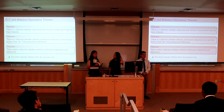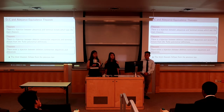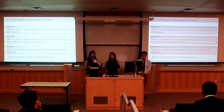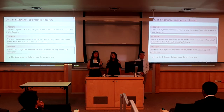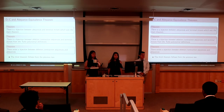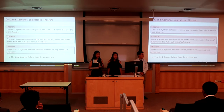From this we have three theorems relating deletion, contraction, and abeyance equivalence. The first is the aforementioned one: there exists a bijection between abeyances and terminal minors. The second is that there exists a bijection between deletion and contraction sequences and terminal minors from the top polynomial definition. The third follows from the previous two: there exists a bijection between deletion and contraction sequences and abeyances.